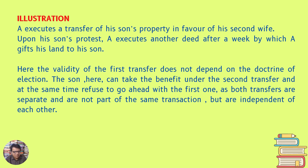Illustration: X executes a transfer of his son's property in favour of his second wife. Upon his son's protest, A executes another deed after a week by which A gives his land to his son. Here, the validity of the first transfer does not depend on the doctrine of election. The son can take the benefit under the second transfer and at the same time refuse to go ahead with the first one, as both transfers are separate, independent of each other, and not part of the same transaction.